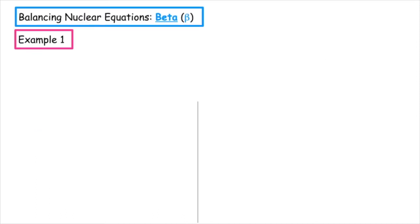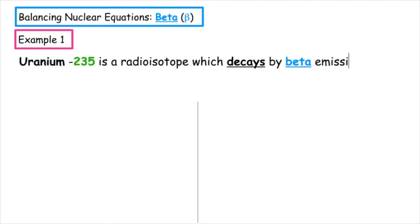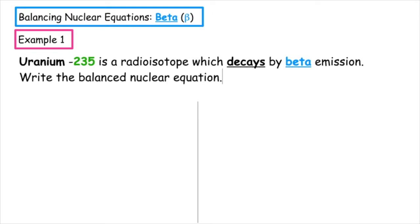Example one: we have uranium-235, which is a radioisotope which decays by beta emission. Write the balanced nuclear equation. The chemical symbol for uranium is U. It has the atomic number 92 and the mass number 235. It decays or releases a beta particle, which is an electron, which has a charge of negative one and a mass of zero.